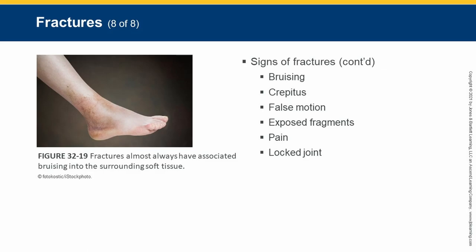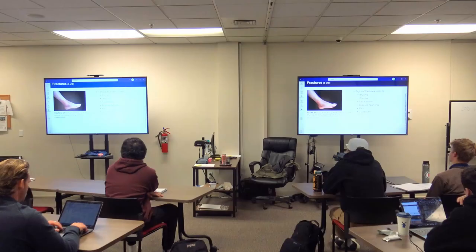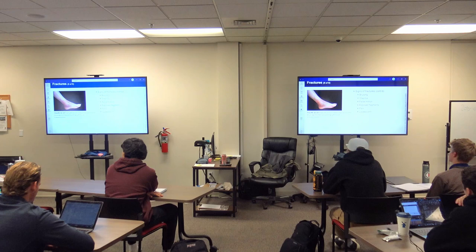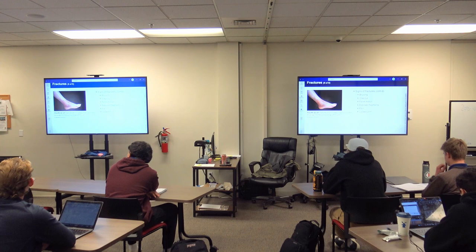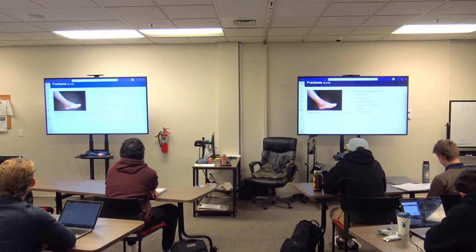We use a mnemonic when assessing for fractures — DCAP-BTLS. With fractures specifically we look for bruising and crepitus. False motion is also a key sign — motion coming from somewhere that should not be moving, like a shin bending where there's no joint. If I break my arm and wave it and it starts wagging, that's false motion.